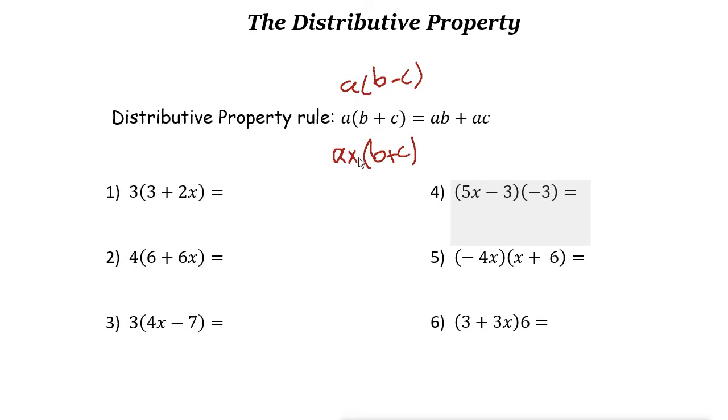To simplify these, we multiply a by b first, so we get ab. Then we multiply a by c, then we get ac. Let's take a look at these examples.